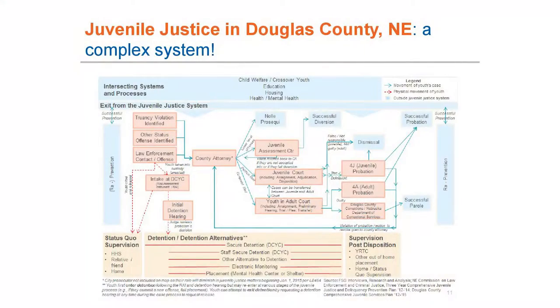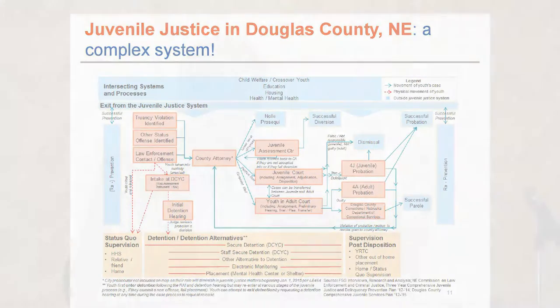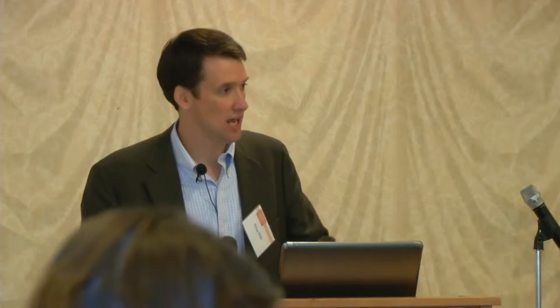Douglas County is Omaha and surrounding towns in Nebraska. We were brought in to help with a juvenile justice system that was not working very well — over 200 agencies working with youth, 6,000 kids, a third going into the system ending up in court, lack of common measures, problems with data consistency, lack of trust, lack of accountability. We did a similar system map to show how kids work their way through the system.